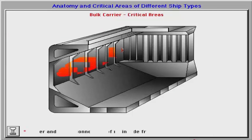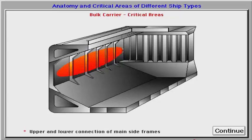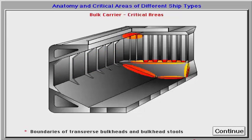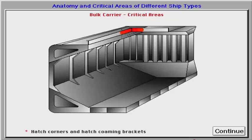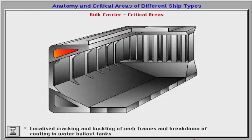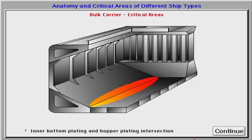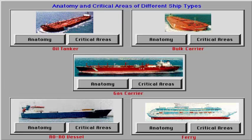Problem areas to be given special attention on board a bulk carrier are: upper and lower connection of main side frames; boundaries of transverse bulkheads and bulkhead stools; cross deck structure; hatch corners and hatch coaming brackets; localised cracking and buckling of web frames and breakdown of coating in water ballast tanks; and inner bottom plating and hopper plating intersection.